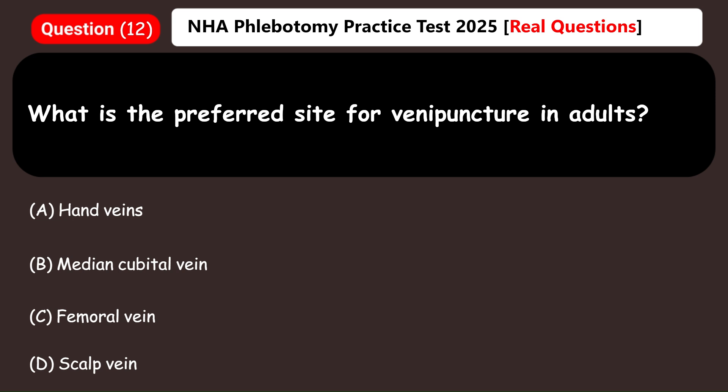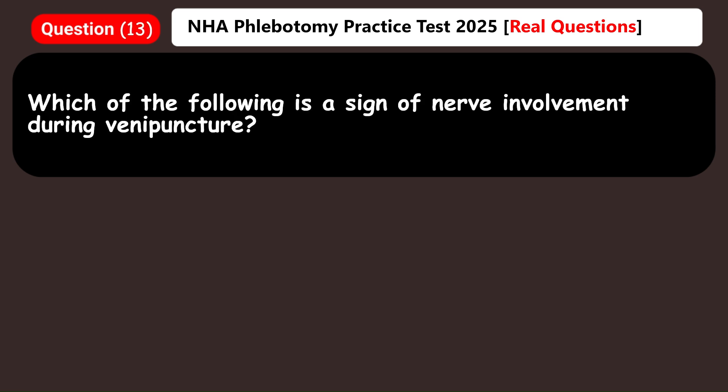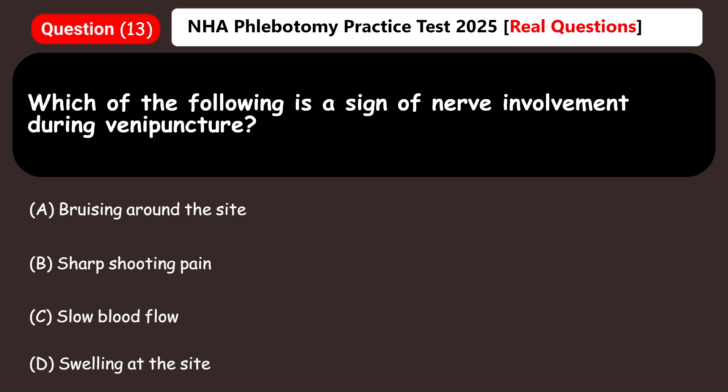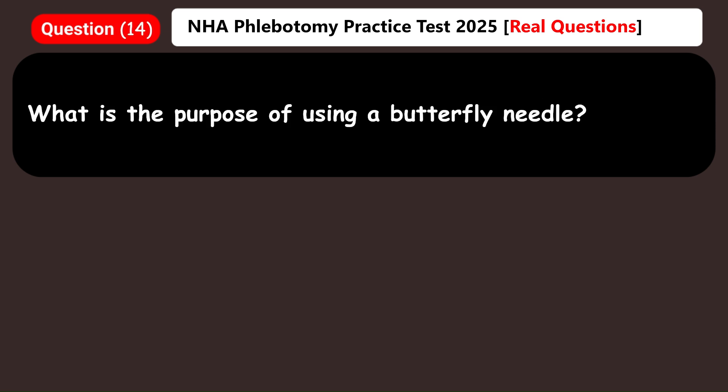What is the preferred site for venipuncture in adults? A) Hand veins, B) Median cubital vein, C) Femoral vein, D) Scalp vein. Answer: B) Median cubital vein. Which of the following is a sign of nerve involvement during venipuncture? A) Bruising around the site, B) Sharp shooting pain, C) Slow blood flow, D) Swelling at the site. Answer: B) Sharp shooting pain.